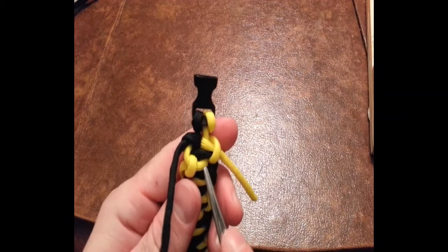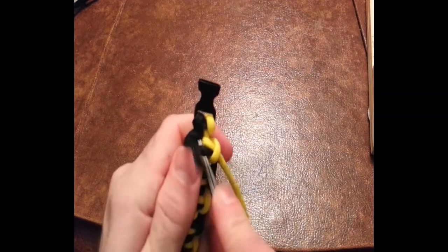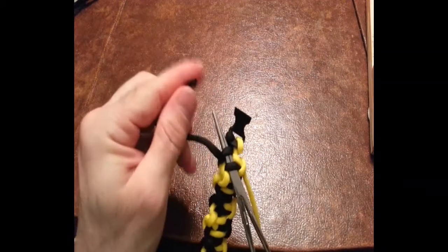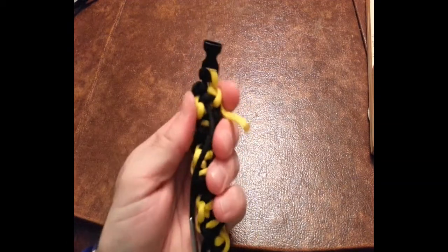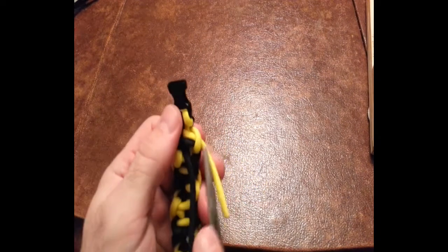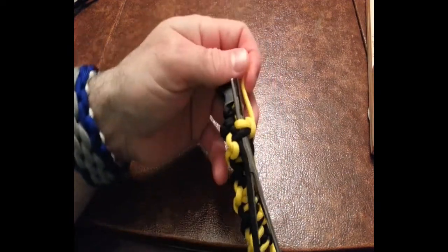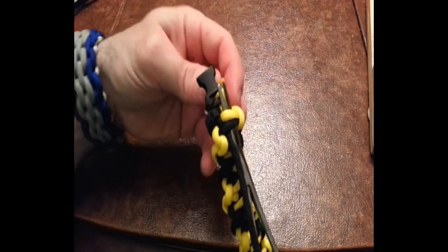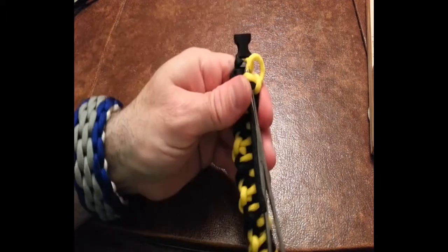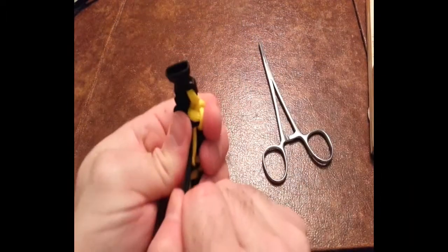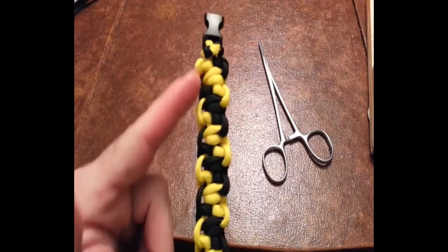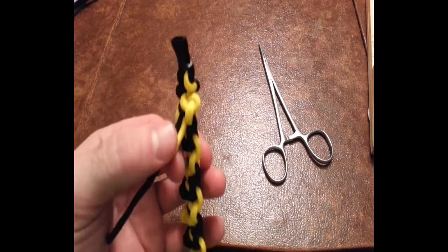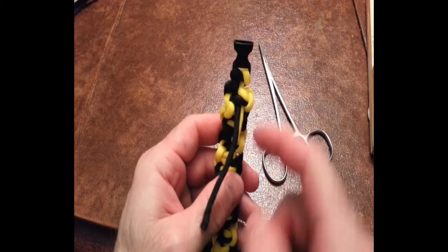You're going to grab your hemostats. Tuck it in just like that. Gives you a nice finished look. There's no singed marks on the outside of it. You can either singe it when you cut it here or just leave it like that.